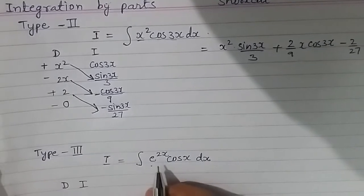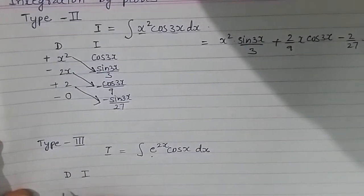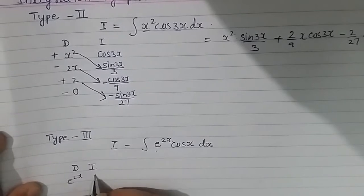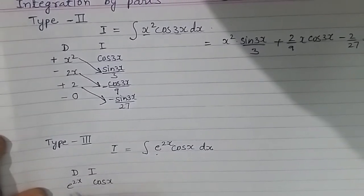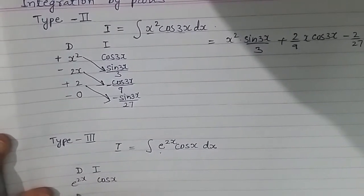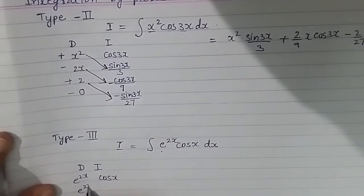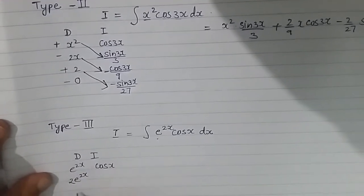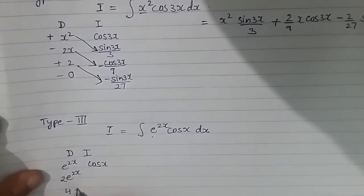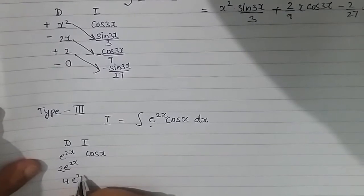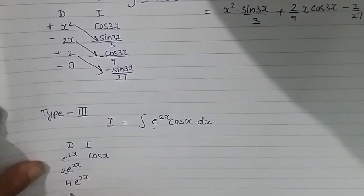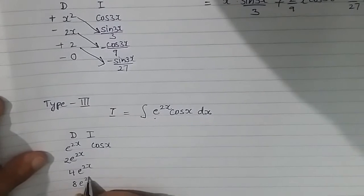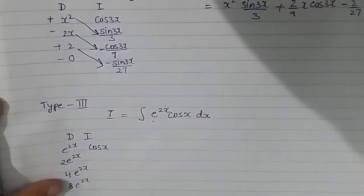The function I will differentiate is e^(2x) and the function I will integrate is cos x. Differentiating e^(2x) gives 2e^(2x), differentiating again gives 4e^(2x), then 8e^(2x) — it goes on like this indefinitely.